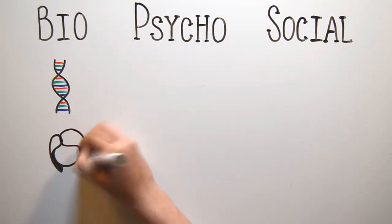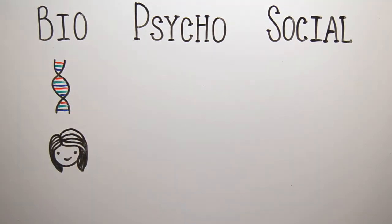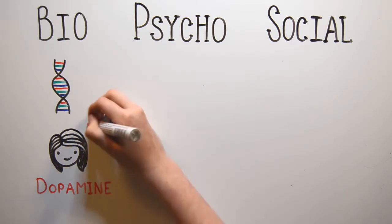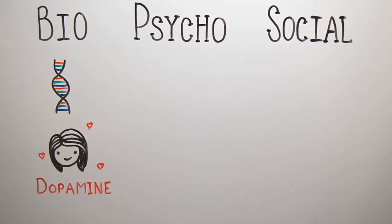Researchers have also found there are some differences in how the reward system in the brain works for people at higher risk of anorexia. You know that amazing feeling you get when something really great happens? That's your brain's reward system at work. A neurotransmitter in the brain, called dopamine, is responsible for that feeling, and it seems like dopamine may act a little differently in people who are likely to develop anorexia.